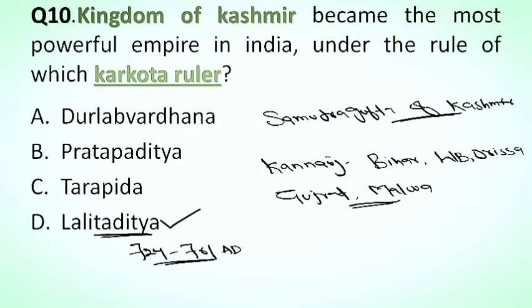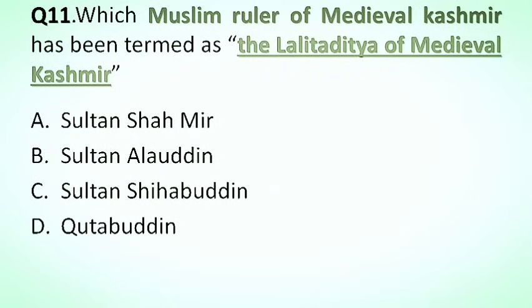Our next question is: which Muslim ruler of medieval Kashmir has been termed as the Lalitaditya of medieval Kashmir? Options: A. Sultan Shahmir, B. Sultan Alauddin, C. Sultan Shihabuddin, D. Qutbuddin. The correct answer is option C, Sultan Shihabuddin. He is also termed the Lalitaditya of medieval Kashmir because of his conquests.